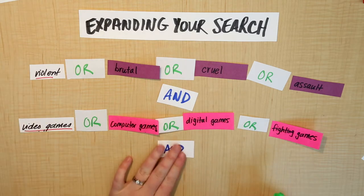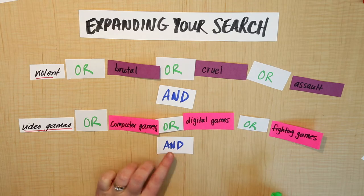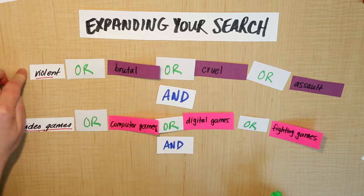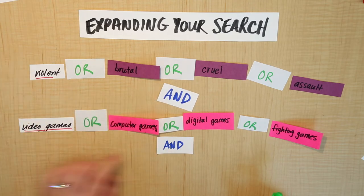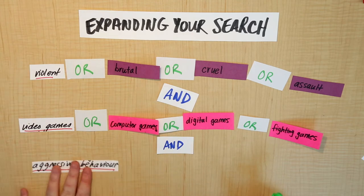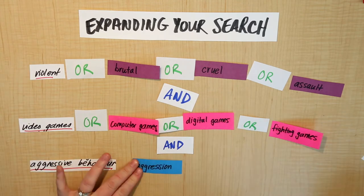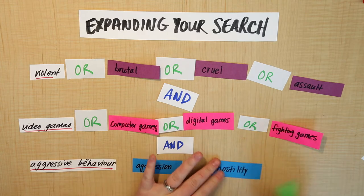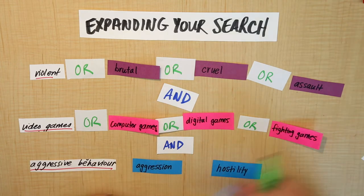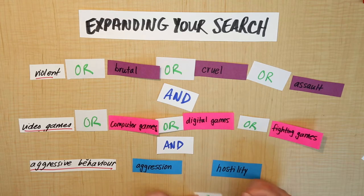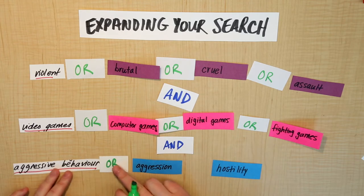So we want at least one of these and at least one of these and at least one of these. Aggressive behavior OR aggression OR hostility. Let's just go with that. We'll say that any of these ones are okay.